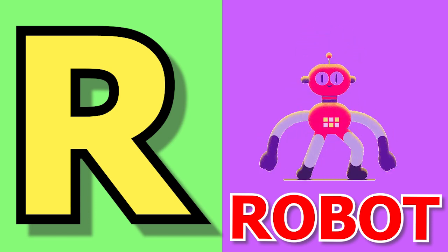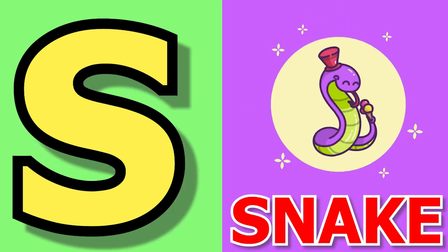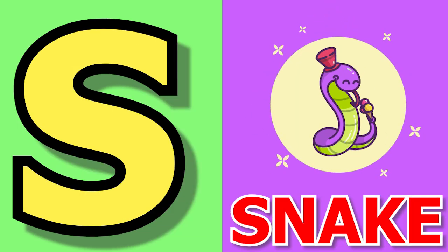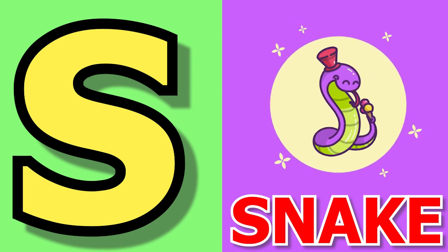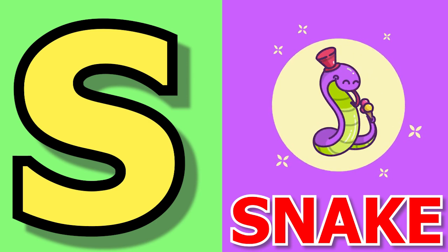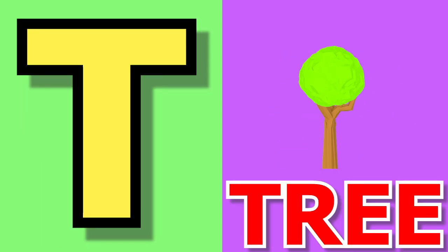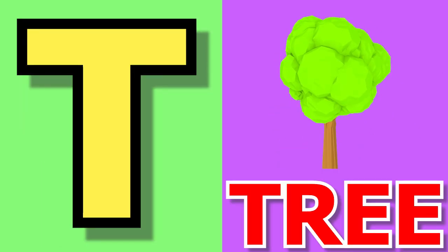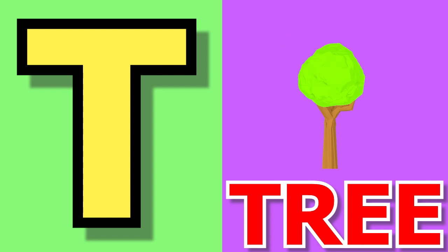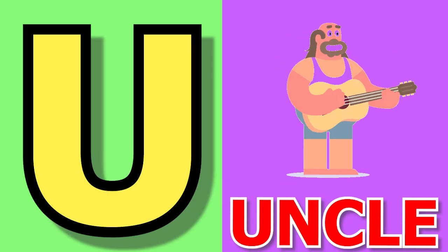R for robot, robot means robot. S for snake, snake means sap. T for tree, tree means pig.